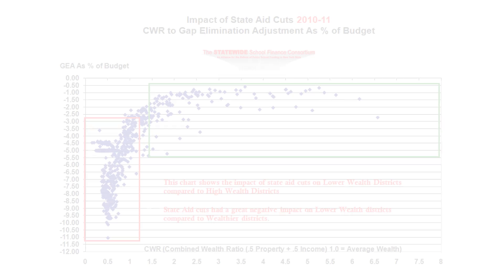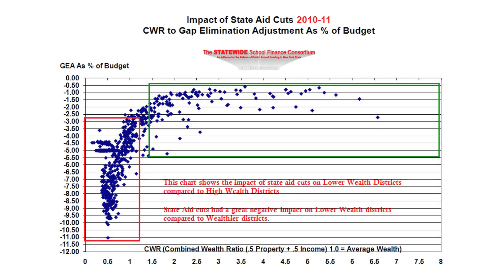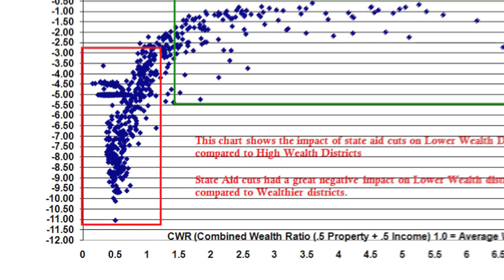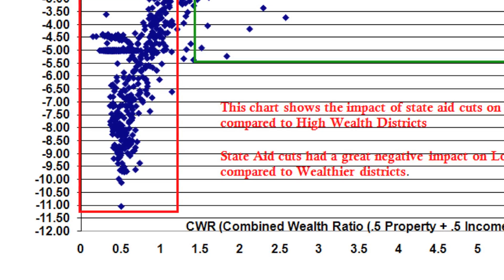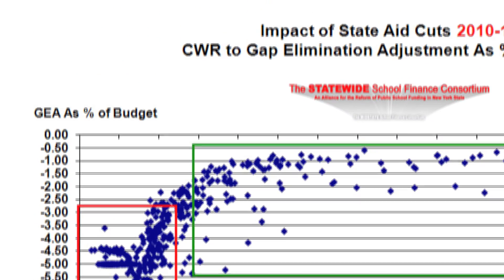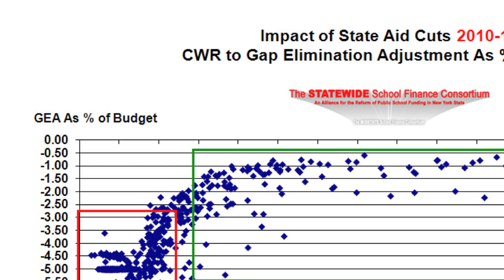Here's what we've got in this slide. This is the impact of the state aid cuts last year, 2010-11. We're going to compare two pieces of data: the combined wealth ratio on this axis, and the impact of the loss of the budget cut against the district's budget. The gap elimination adjustment was the amount of money cut from school districts to help solve the state's budget gap, because they were running a deficit. What was called the GEA, or gap elimination adjustment, eliminated the state's gap.